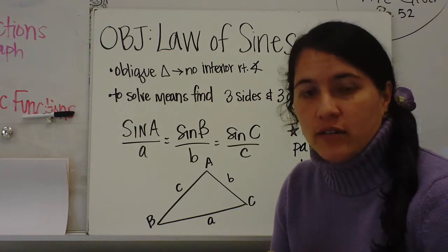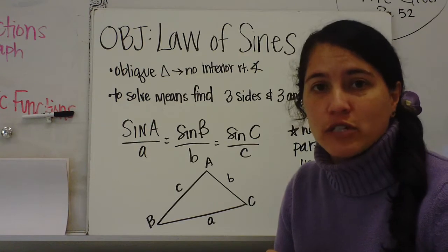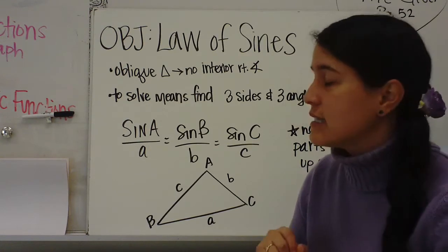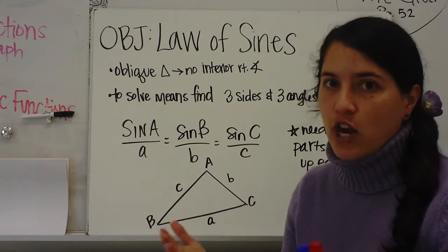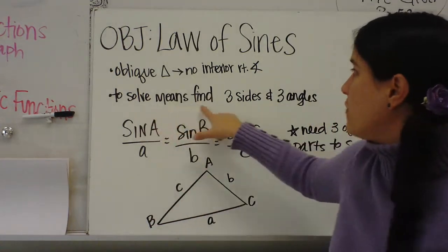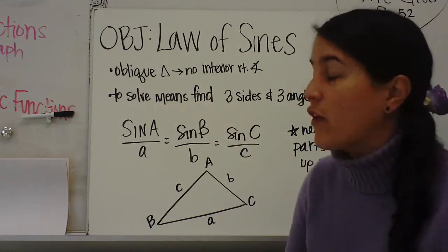You could use SOH CAH TOA if you have right triangles, but if it's an oblique triangle you can't use SOH CAH TOA, so you're going to have to use the Law of Sines. The whole thing is we want to solve the triangle. You're going to see directions that say solve the triangle. To solve means to find the three sides and the three angles of those triangles. That's what we're focusing on.